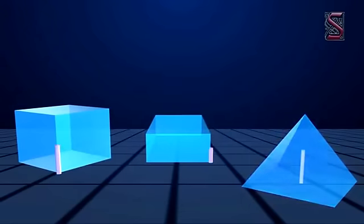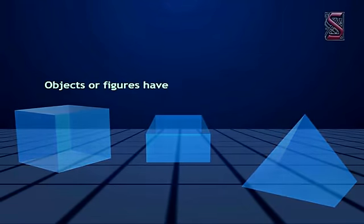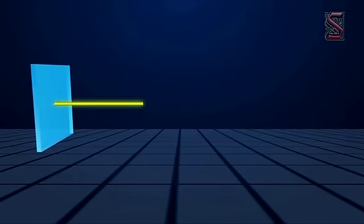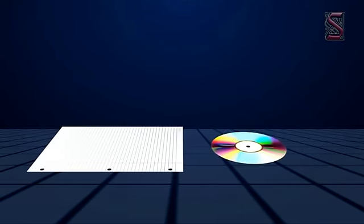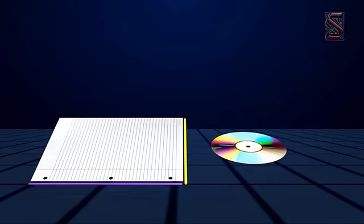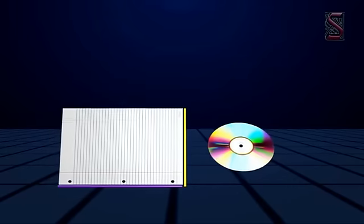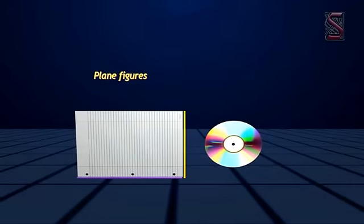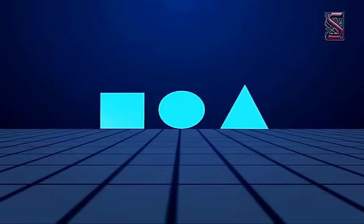Objects or figures that have only length are known as one-dimensional objects. For example, a line is a one-dimensional figure. A ray is a one-dimensional figure. Figures having some length and breadth are known as two-dimensional figures. These figures can be easily represented on a plane. That is why they're called plane figures. Examples: square, circle, triangle are two-dimensional figures.